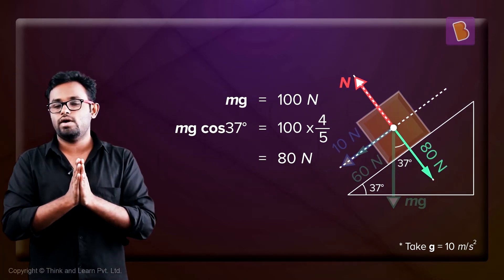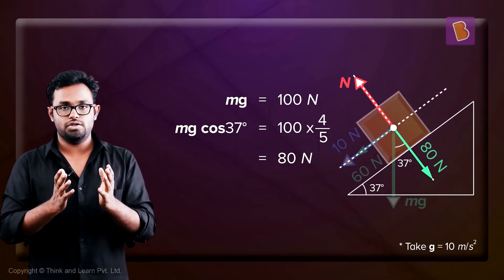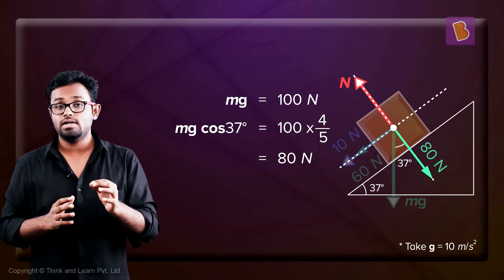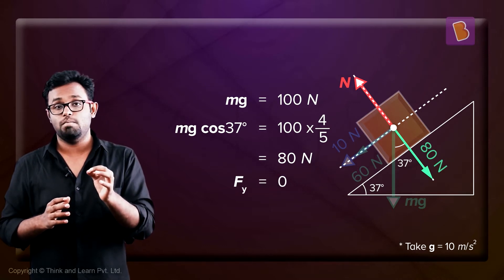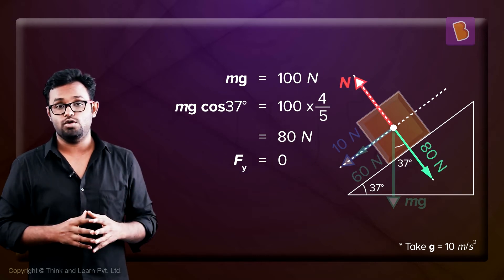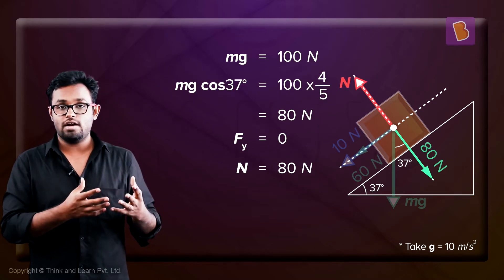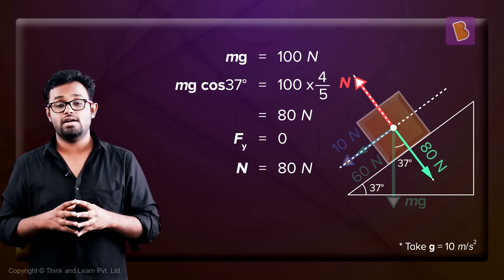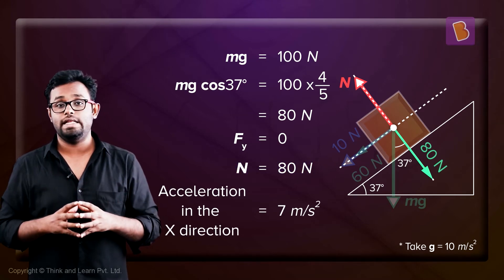But do you see any acceleration in the y-direction? There is no acceleration in the y-direction. What does that mean? It means that the net force in the y-direction must be equal to zero. And so, N must be equal to 80 Newtons. So you have calculated the value of N and the acceleration in the x-direction.